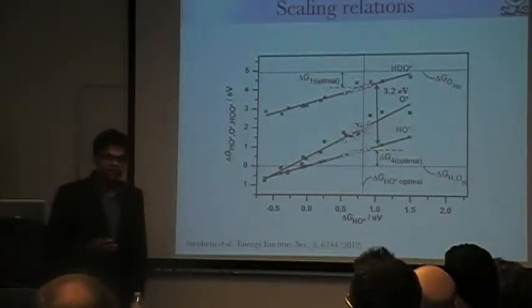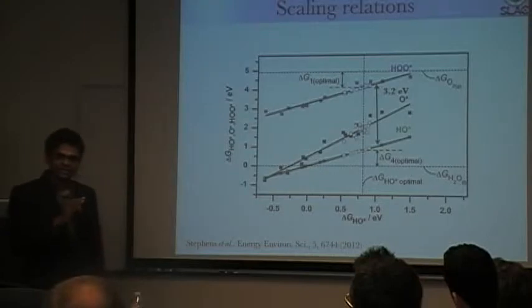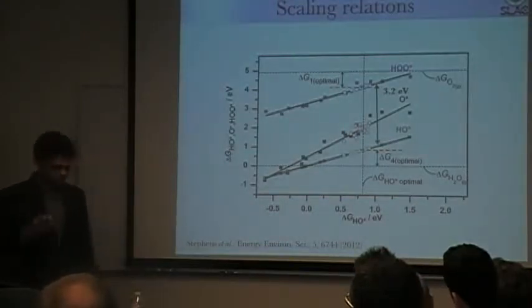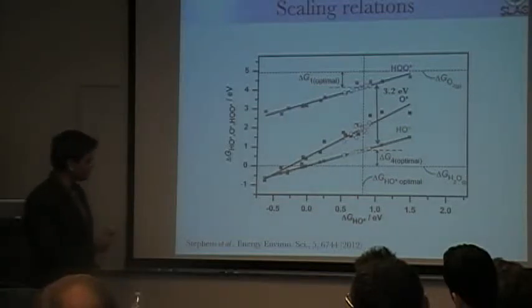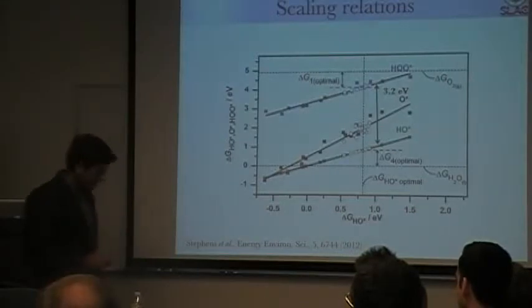So this immediately tells you why this is 3.2. This is why you have to pay that 0.4 volt penalty, because the best catalyst essentially will have an overpotential that is 3.2 minus 2.46, which is about 0.8. You have two electrons, two proton-electron transfer steps, so divide by two. So 0.4 volts is the best you can ever do.